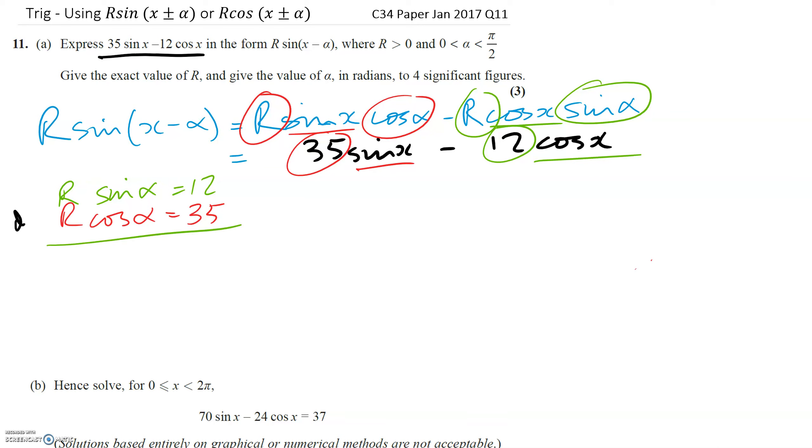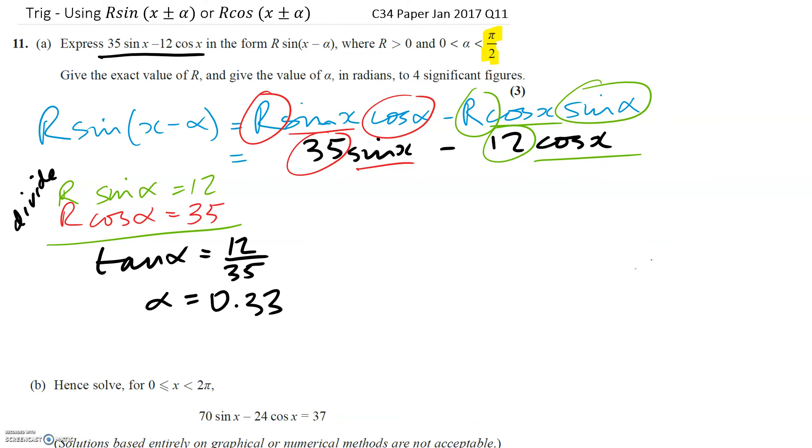And we can divide them. So if we divide both of these, we're going to get tan alpha equals 12 over 35. And if we do inverse tan of that, that's going to give us 0.33. Make sure you're in radians. It does say up here pi over 2, so you know you're going to be in radians. Also says it here, actually. So we need to give this to four significant figures. I think that does work out as 0.3303. But for significant figures, we should add the zero there. And R squared will equal 12 squared plus 35 squared. So R will equal 37.